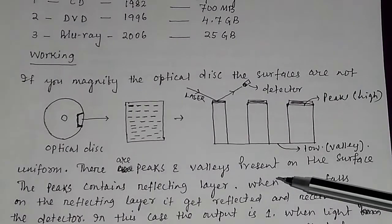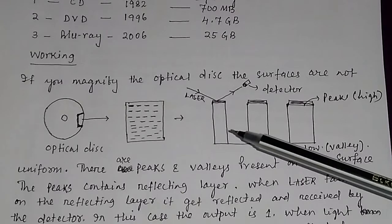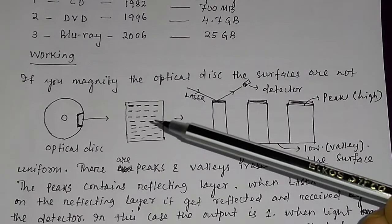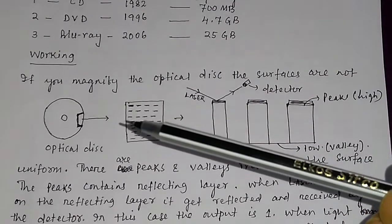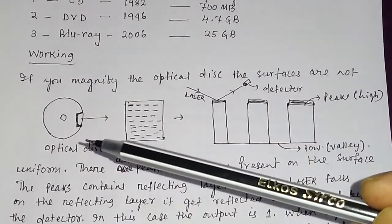How optical data storage works? Basically, the optical data storage device is like a circular disk.